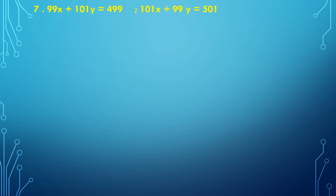Next example is example number 7 from the textbook. The two equations are 99x plus 101y equal to 499 — equation number 1 — and 101x plus 99y equal to 501 — equation number 2.